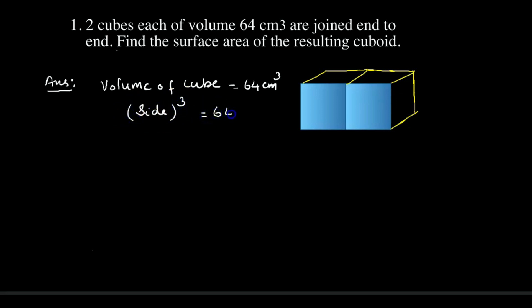To get the side of cube, we have to factor 64. So we can write here 2 into 32 is 64, and 2 into 16 is 32, 2 into 8 is 16, 2 into 4 is 8, and 2 into 2 is 4, and 2 into 1 is 2.